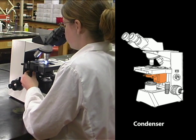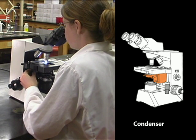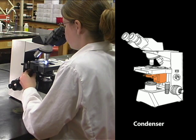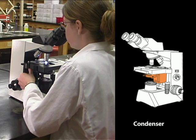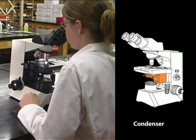A condenser is a third optical component of a compound microscope. Its purpose is to gather diffused light and concentrate or condense it into a narrow cone in the plane of the object. This improves the effectiveness of the objective lenses.